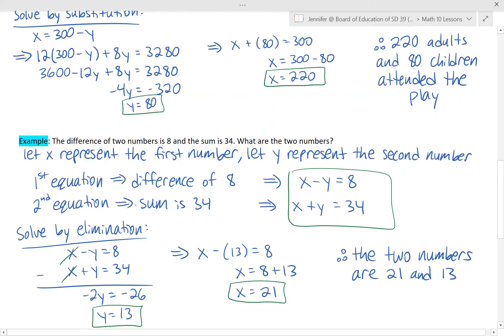So then I decide to solve by elimination because the X values are already the same. So I can go right into eliminating. Those can just disappear. We've got negative 2Y equals negative 26. So we solve and get that Y is 13. And we take that, sub it into either of the original equations, we get X is 21.